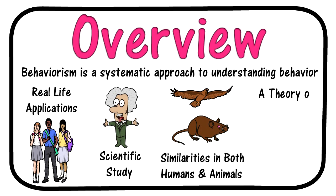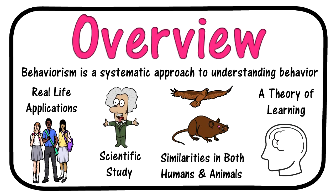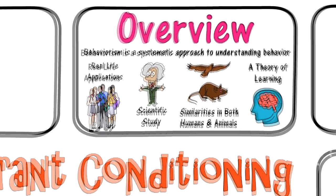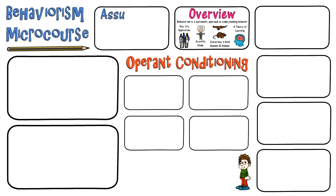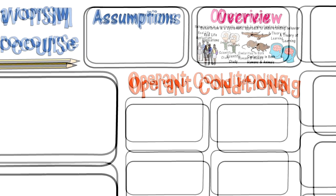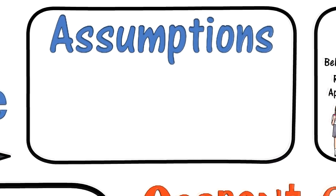There are several different types of learning theory. The three basic ones are the behaviorist approach, the cognitive constructivist, and the social constructivist. This theory of learning is based on the idea that all behaviors are learned through environmental interactions. Let's move on to the next section where we'll take a look at some of the assumptions of behaviorism.